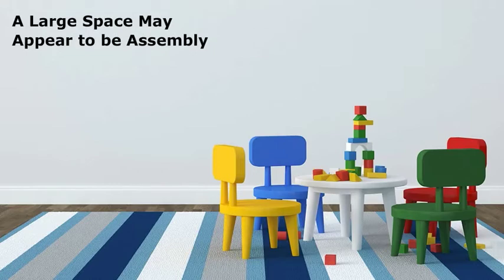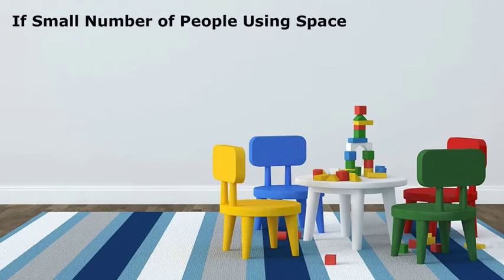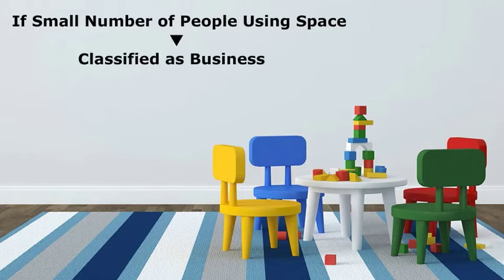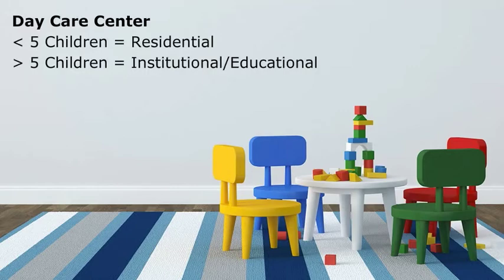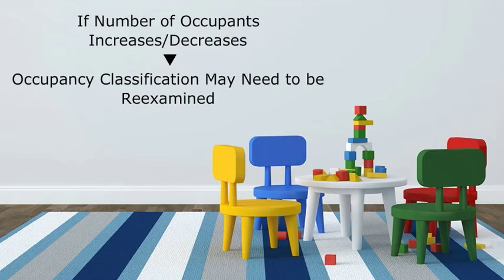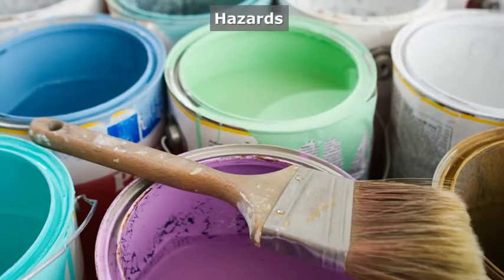Many of the classifications allow for a specific number of people. For example, a space may appear to be an assembly use, but if a small number of people will be using the space it may be allowed to be classified as business when using the IBC. If a daycare center has fewer than five children, it may be considered residential, but if it has more than five it may be considered institutional or educational. So if the number of occupants increases or decreases, the occupancy classification may need to be reexamined.